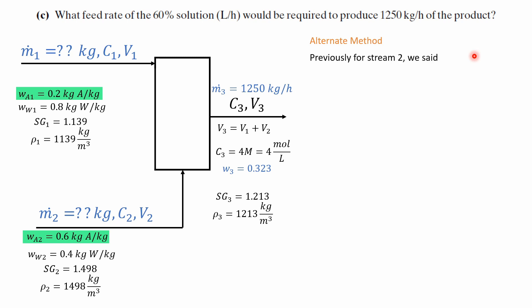So previously for stream 2 we said that the mass for 44.4 kg corresponds to the product stream of 144.4 kg but now we need to solve for the mass flow rate of stream 2 such that we yield 1,250 kg per hour.